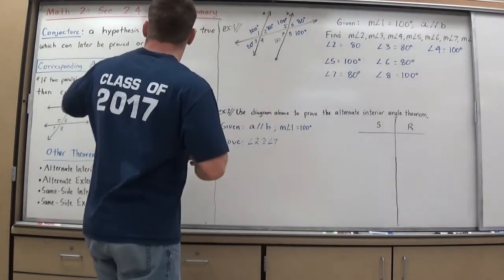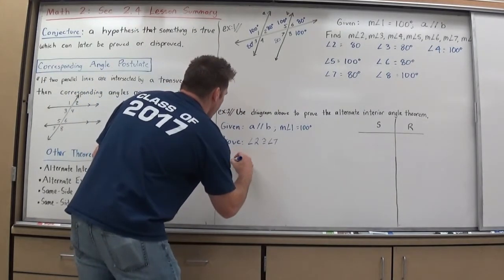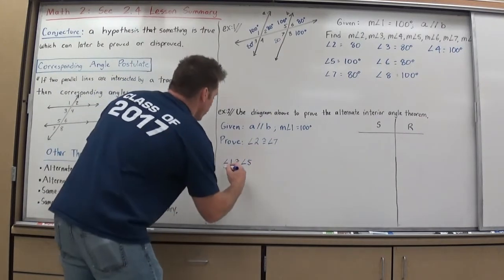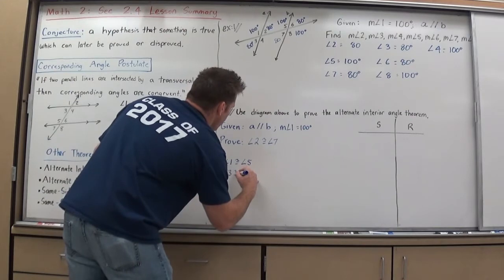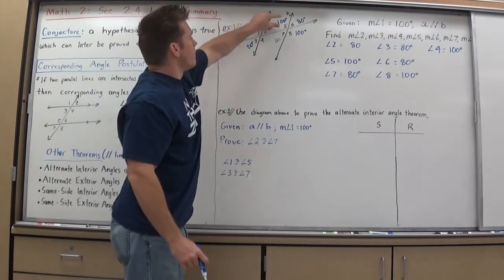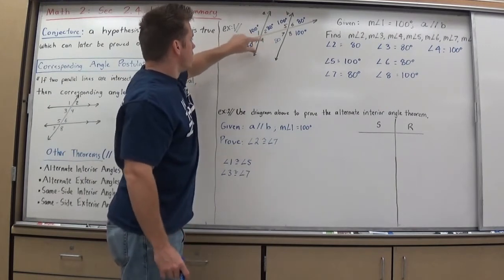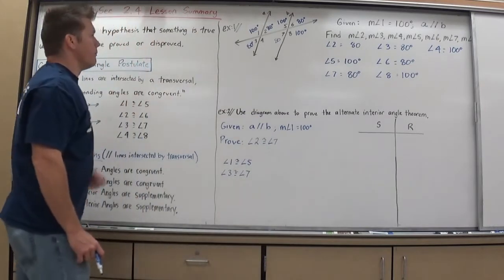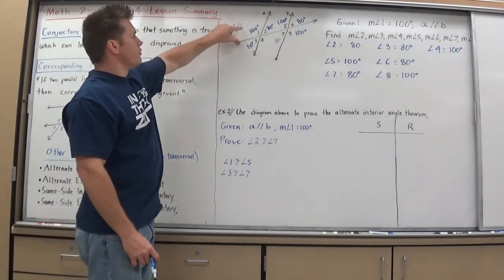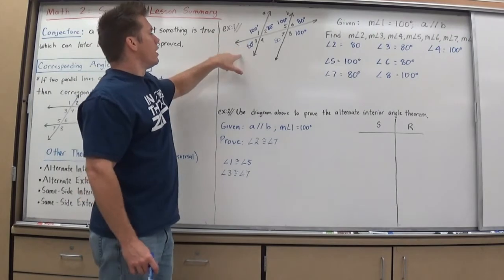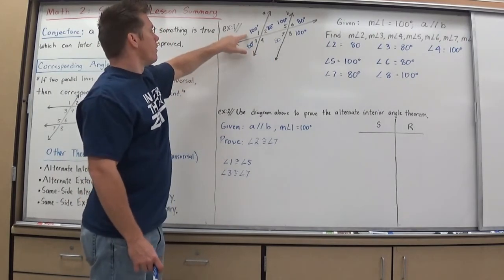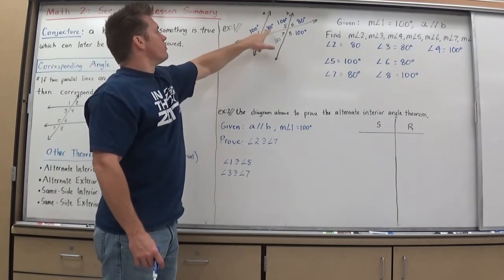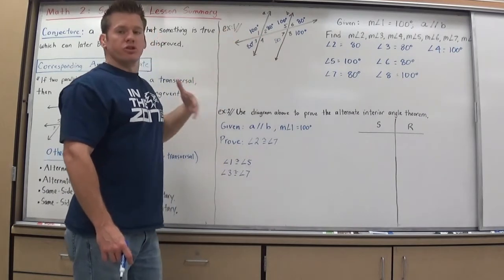The Corresponding Angle Postulate gives me that angle 1 is congruent to angle 5, and angle 3 is congruent to angle 7. The Linear Pair Postulate helps me get angle 3, which then works with corresponding angles. If angle 1 is 100, angle 3 is 80, angle 5 is 100, and angle 2 is a linear pair with angle 1, so that's 80 — and that should get me to where I want to go to prove angle 2 is congruent to angle 7.